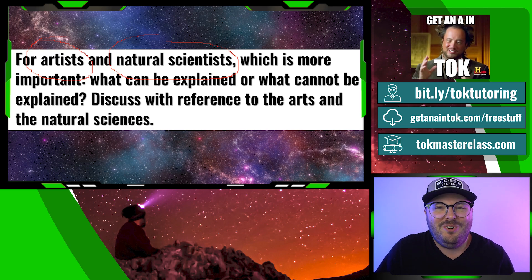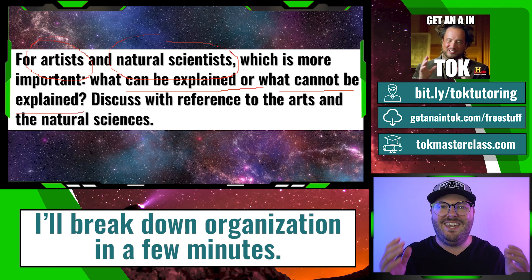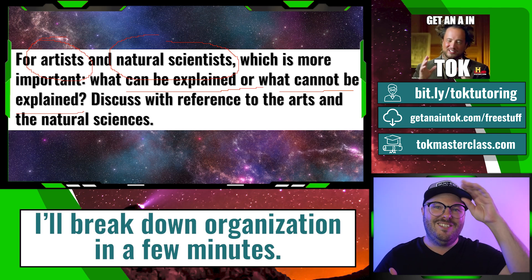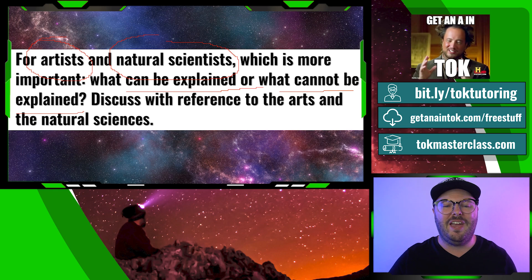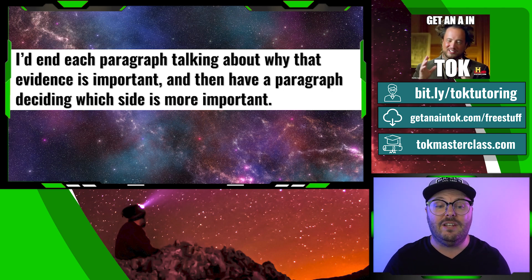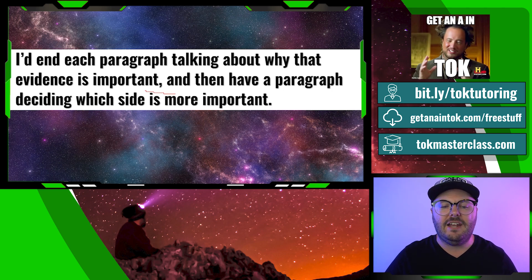They're giving us the potential organizing structure. You can choose one section on what can be explained, and then the second on what cannot be explained. They're telling you the AOKs and they're telling you your organization. This is so easy, and if you're really struggling with TOK, I just really suggest doing this one. I would end each paragraph talking about why that evidence is important, then have a paragraph either for each section or at the end of your body paragraphs that talks about which side is more important.